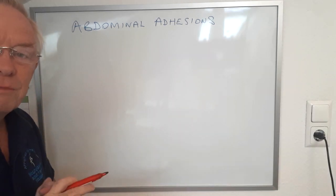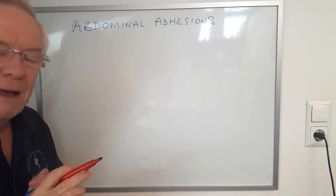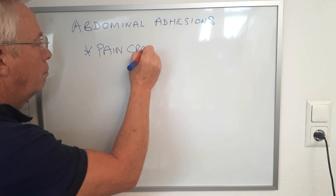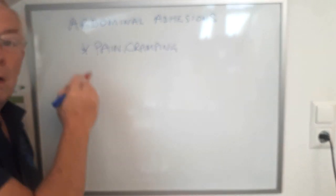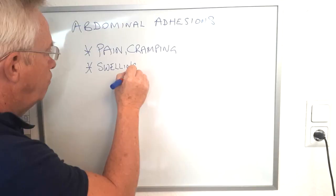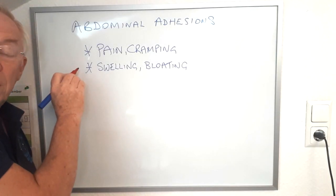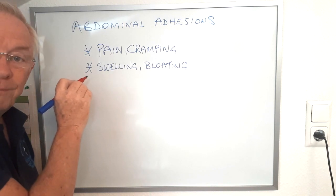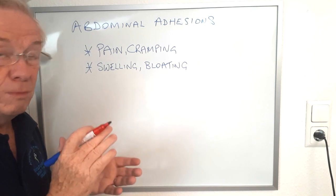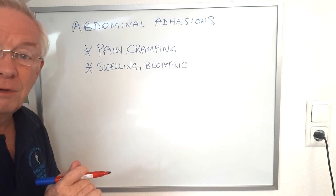Now, there are various symptoms that abdominal adhesions will cause. They include pain or cramping, swelling or bloating of the abdomen, although there can be other causes of that. For instance, too much yeast in the food — that is a common cause of bloating in the abdomen.